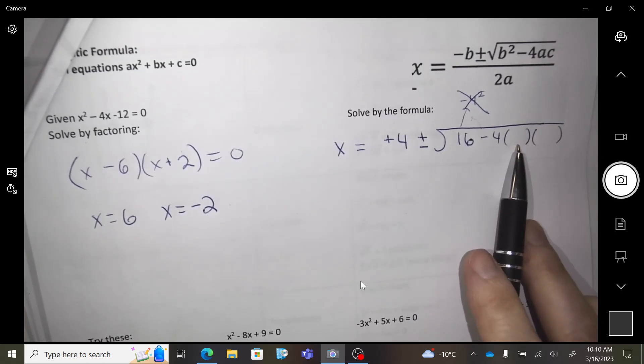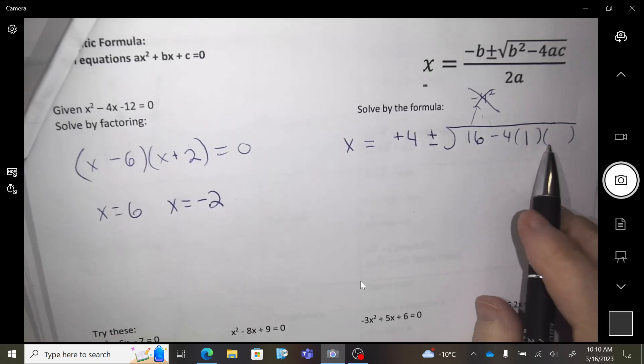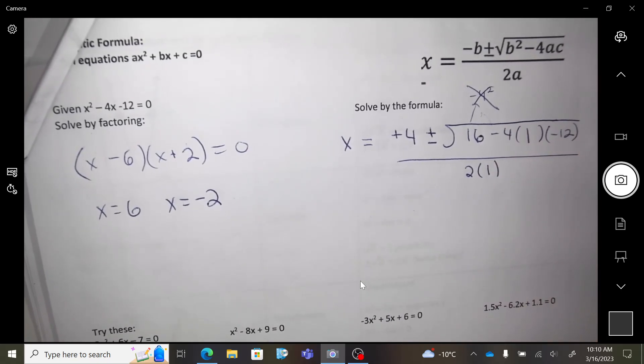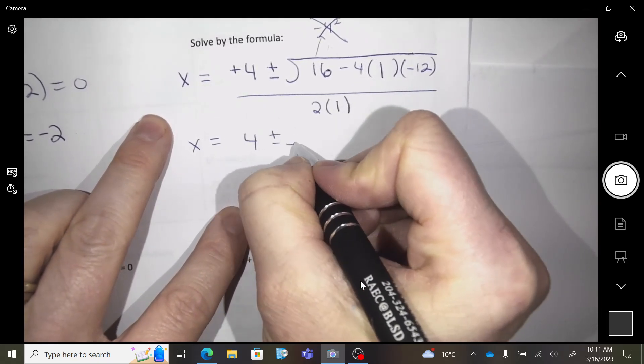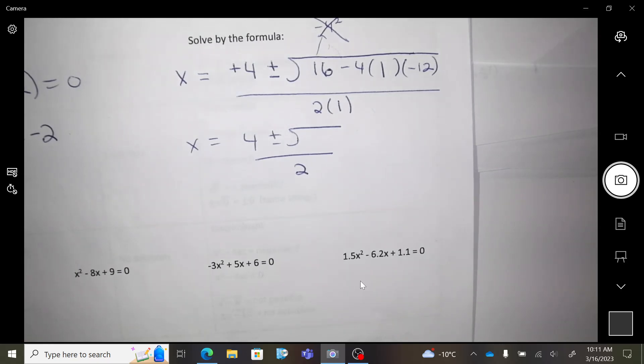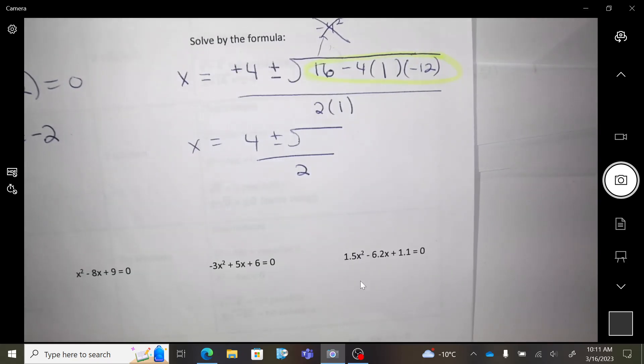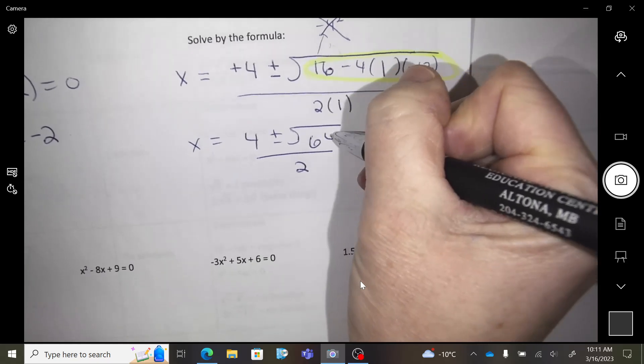So b squared is 16 minus 4 bracket something bracket something. 4 times the a number. So what is the a value? 1. Because you have 1x squared. And c is negative 12, all over 2 times the a number, 1. I want you to go into your calculator and I want you to type in what is 16 subtract 4 times 1 times negative 12. 16 subtract 4 times 1 times negative 12. 64.